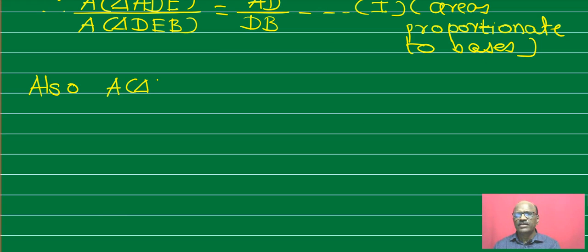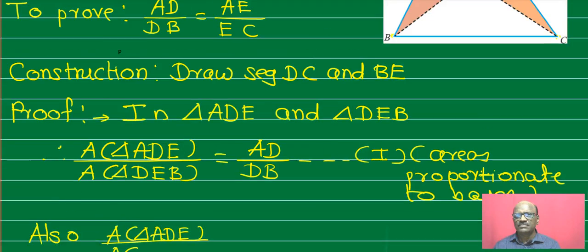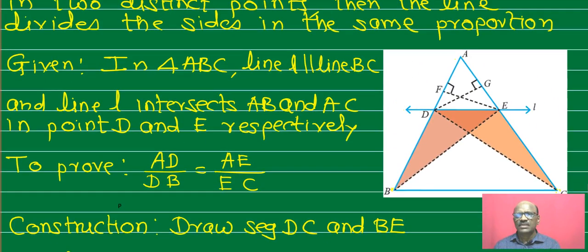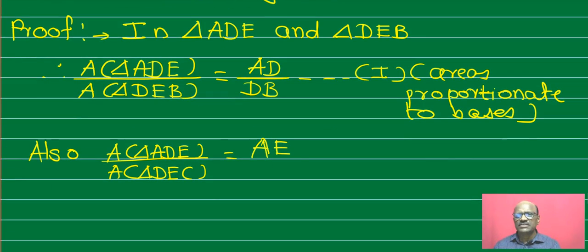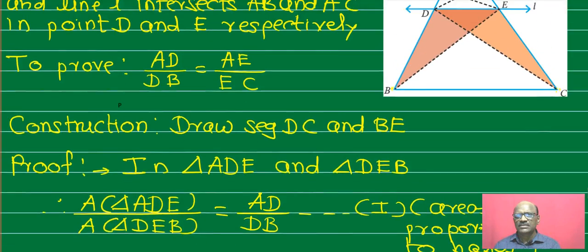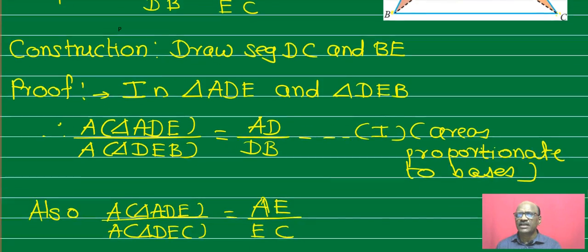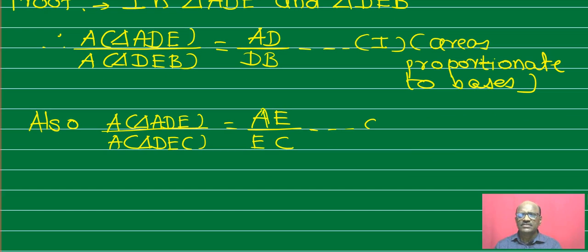Next, area of triangle ADE upon area of triangle DEC equals AE upon AC. The vertex D has height DG, and that height is the same for these two triangles. Therefore their areas again depend on their bases — that is, areas are proportional to their bases.